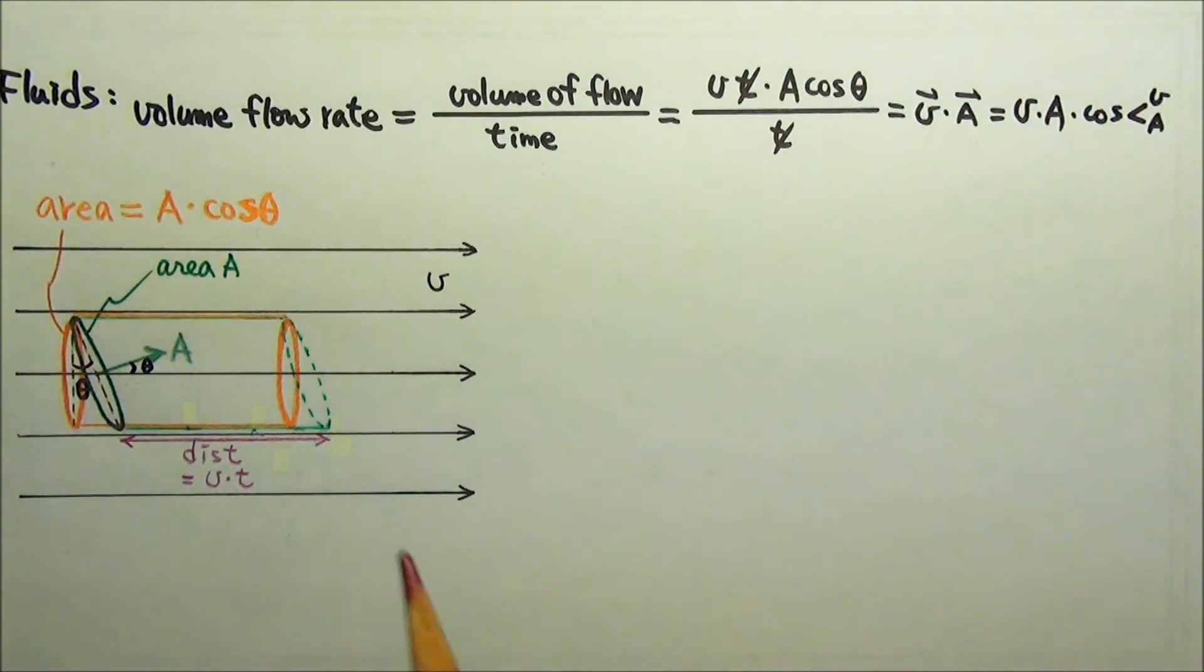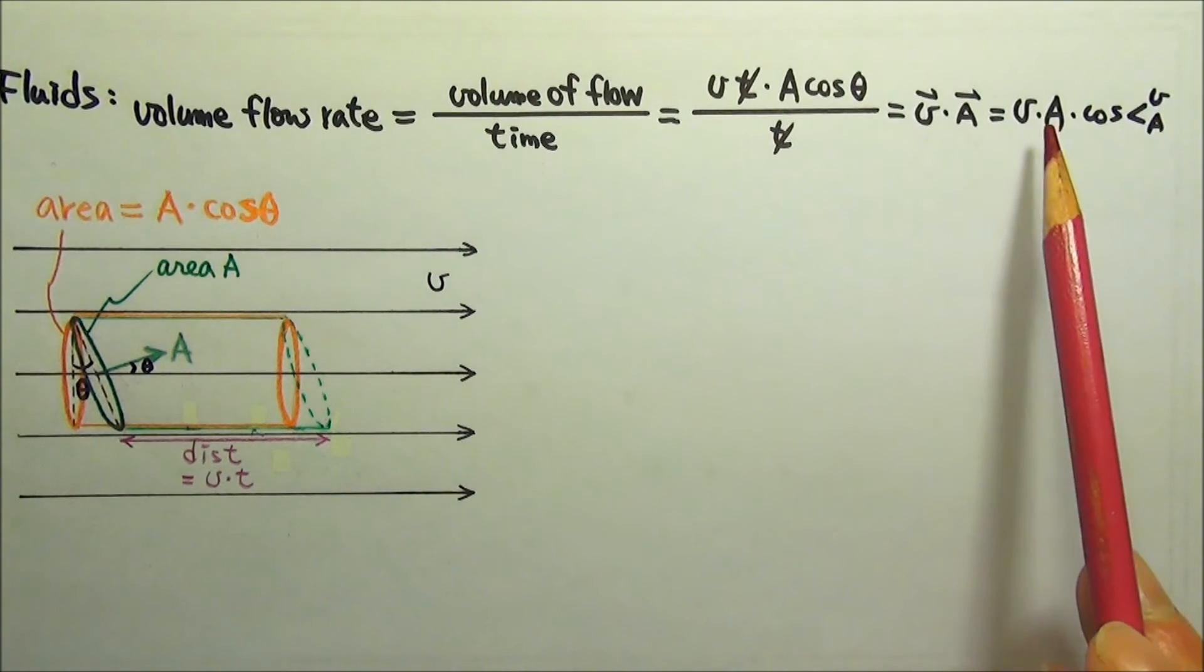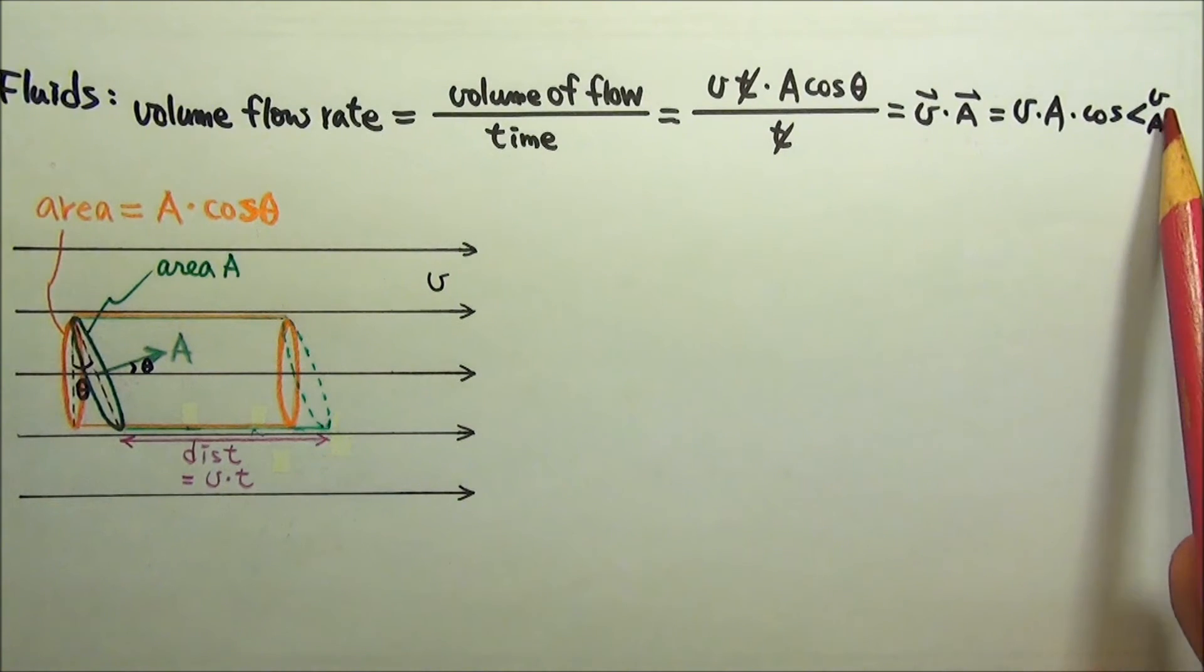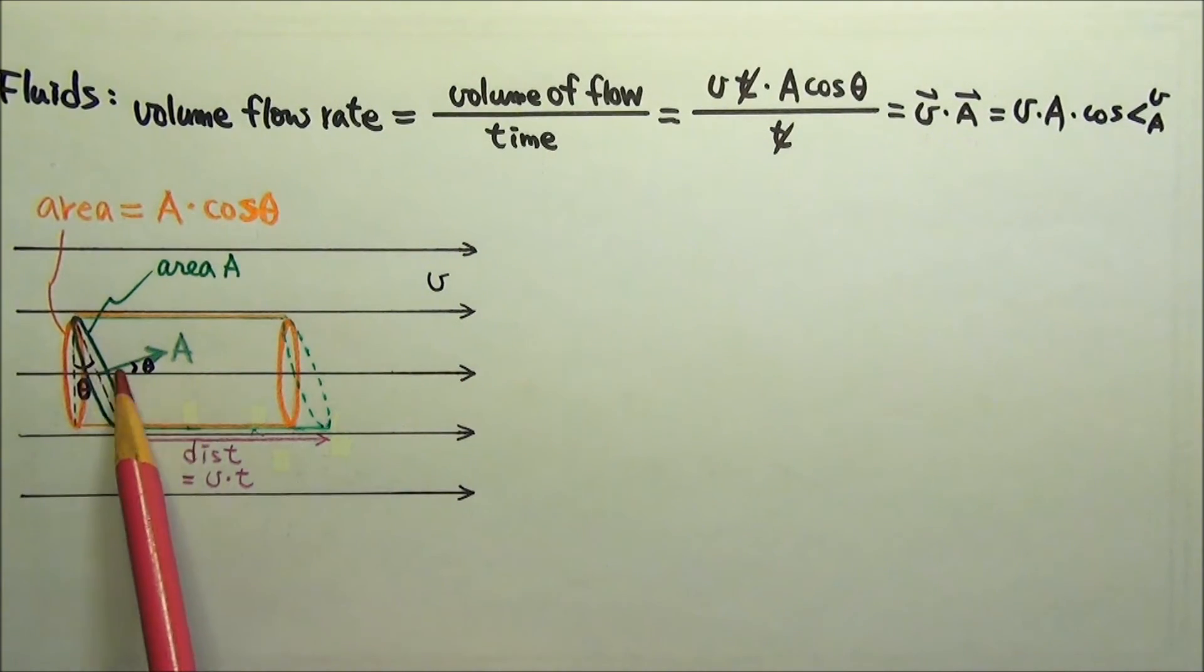In any case, the volume flow rate is V dot A equals to V times A times cosine the angle between V and A. Between V and A, this angle here is the same as the angle theta.